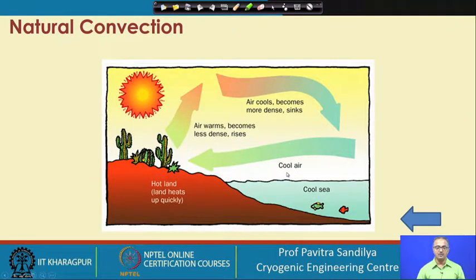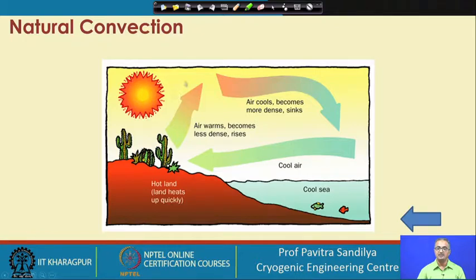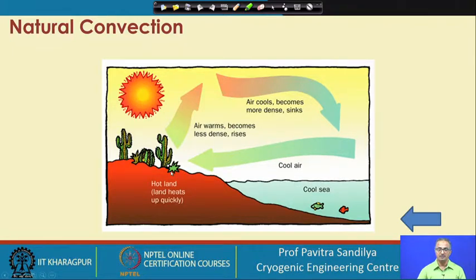Here we have shown a picture of how natural convection can be seen in nature. We have a sea and a hot land. The cold air from the sea tends to go towards the hot land, and because of the sun the air near the land gets heated up. The hot air moves up, gets colder and denser, then comes back down and moves towards the hot land again — creating a circulatory motion with warm and hot air circulating over the land and the sea.